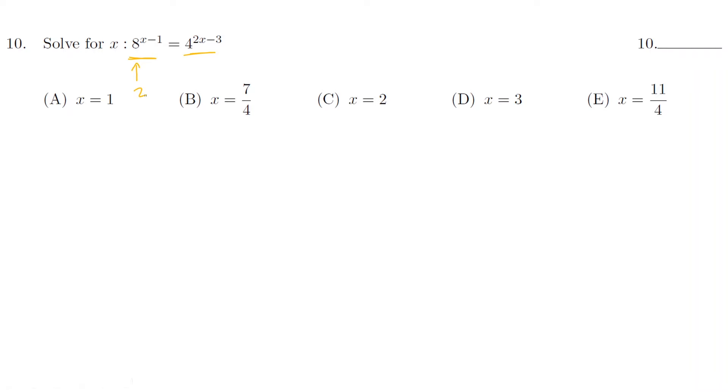It seems like 8 is the power of 2. It seems like 4 is the power of 2. So let's just express everything in terms of power of 2. So 2 to the power of 3 to the power of x minus 1 equals 2 squared to the power of 2x minus 3. Now what I do know is that I know that powers multiply.